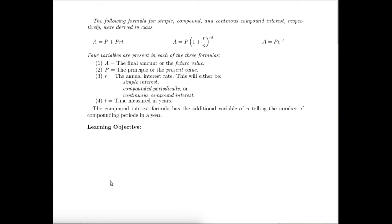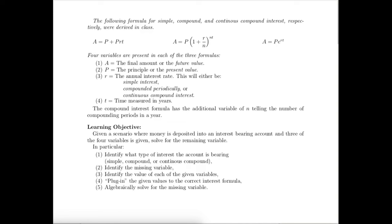So let's talk about what you need to learn in this module. In general, we'll be looking at situations where money is being deposited and becoming a future value. So we will be given three of the four variables, and our job will be to find algebraically the missing variable. What that means in any given problem, we'll need to do the following.